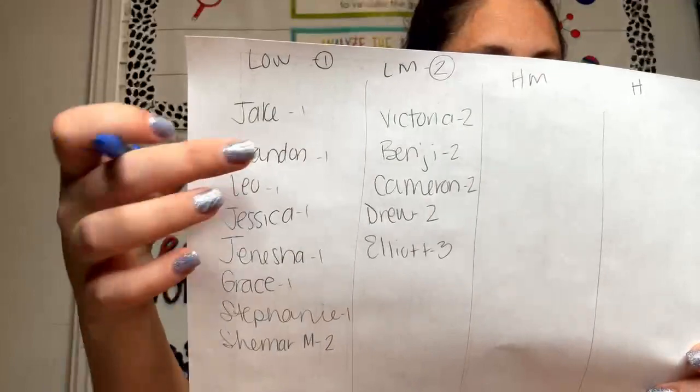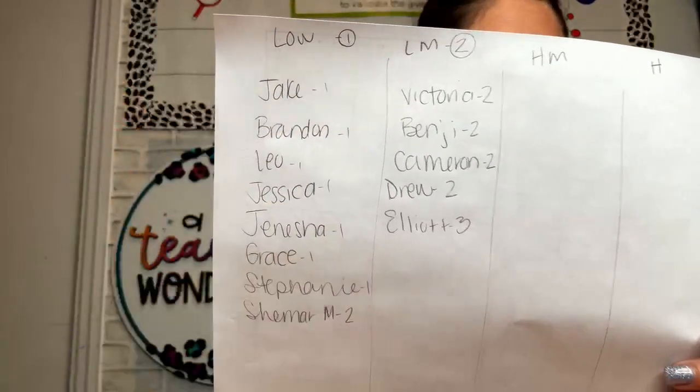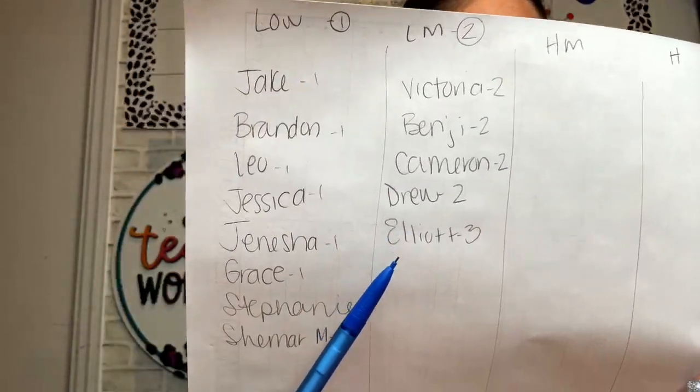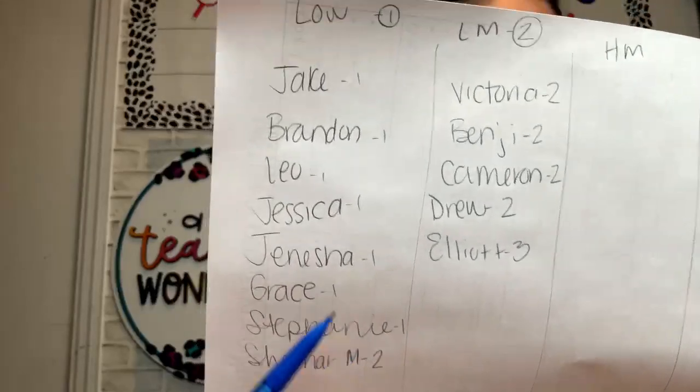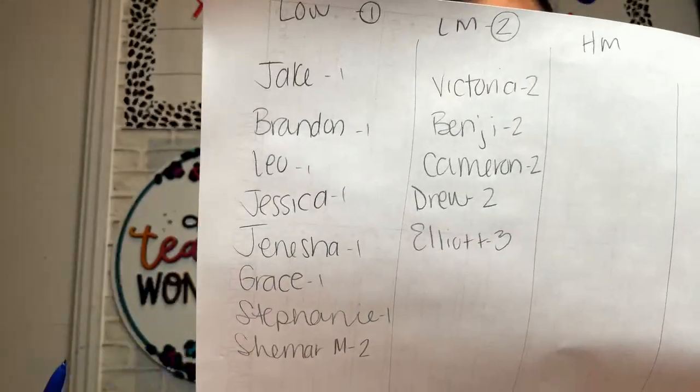Now I want you to go through your twos — not necessarily super high but also not super low — and put them in your low-mediums. Go ahead and pause. For my low-mediums, I decided to put their numbers here. I noticed that Elliot was also a three, and I have Shamar down here who's a two, so I could possibly combine them.